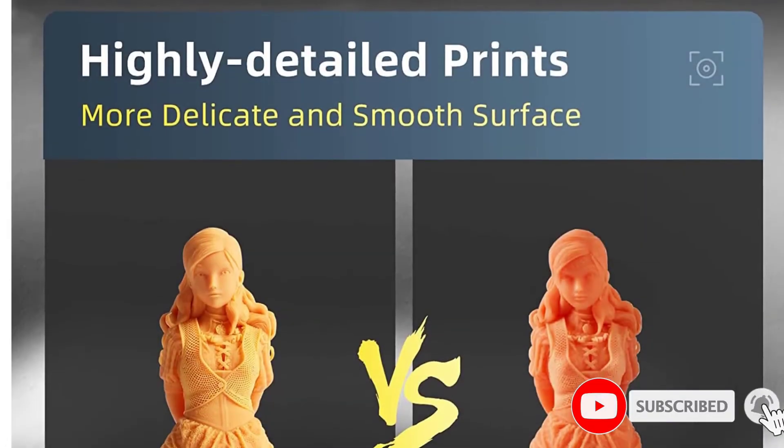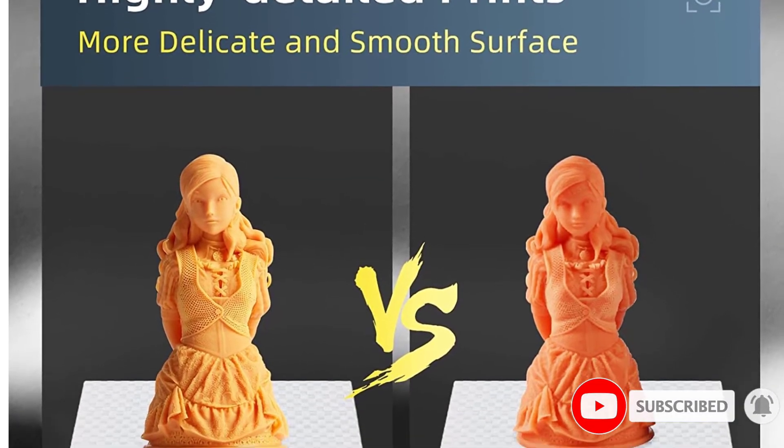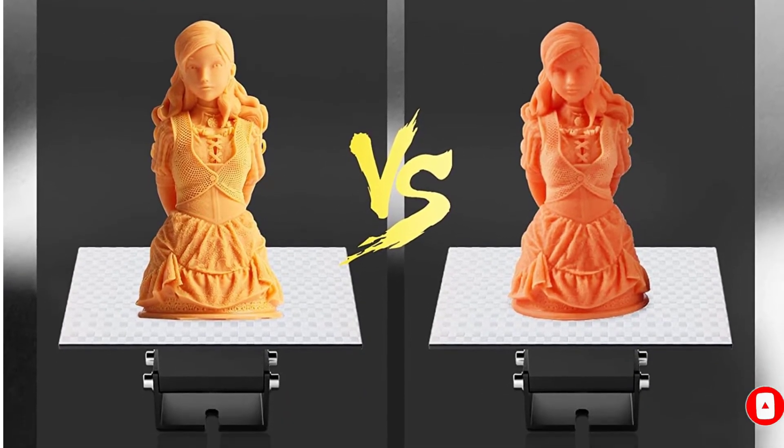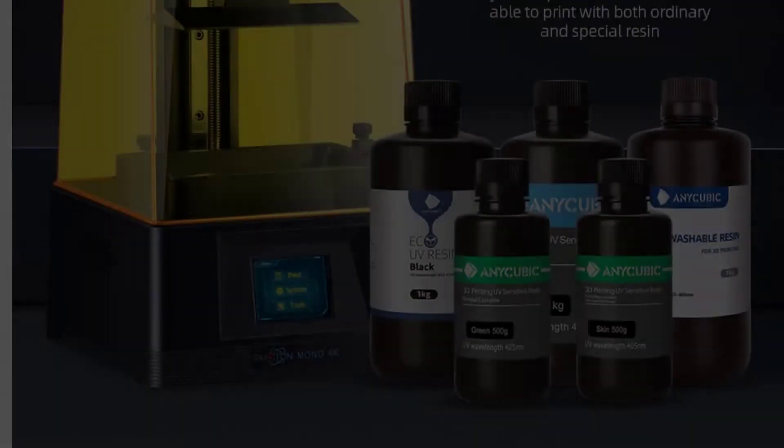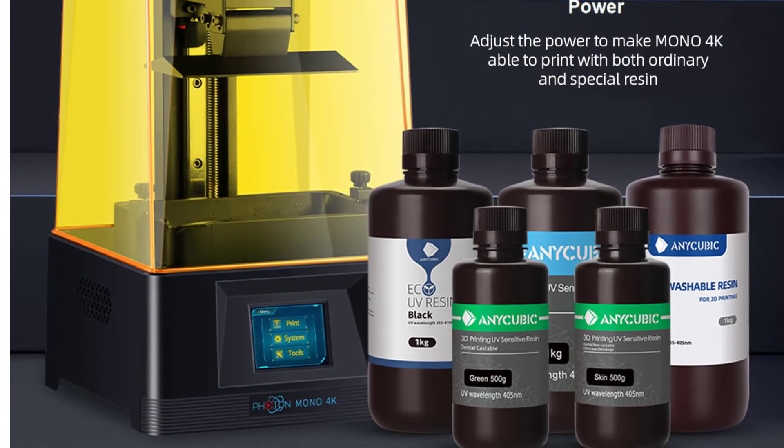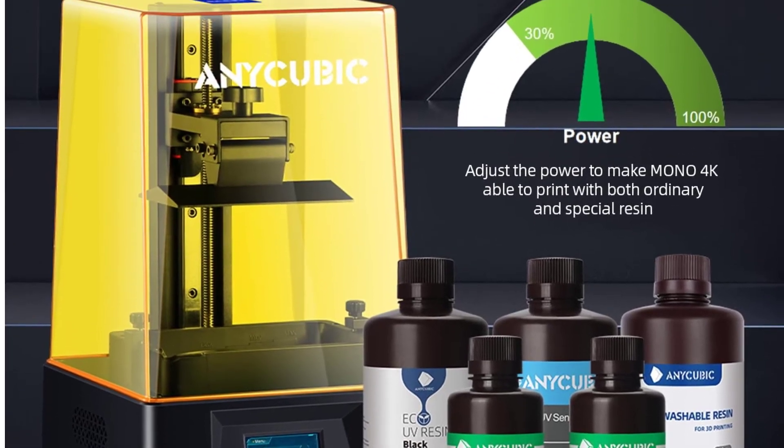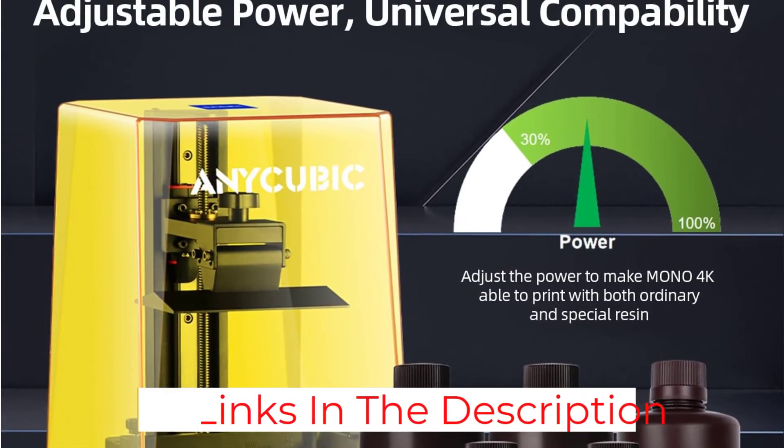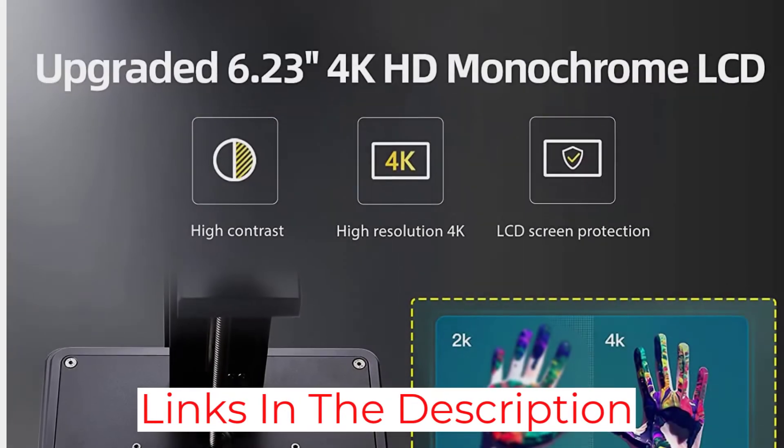Since the UV lighting is uniformly distributed, the resulting 3D models are very detailed. Anycubic Photon Zero allows you to assign different exposure values and print 8 different models simultaneously. Thus, you can choose the best exposure time for resin in one print.